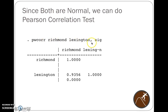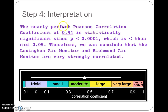Since both are normal, we can do a Pearson correlation test. We run pwcorr richmond lexington comma sig. We see a very high correlation coefficient of .9356 and a p-value of .0000, reported as less than .0001. This nearly perfect Pearson correlation coefficient of .94 is statistically significant since p is less than .001, which is definitely less than an alpha value of .05. Therefore, we can conclude that the Lexington air monitor and Richmond air monitor are very strongly correlated.